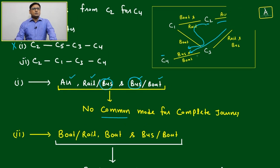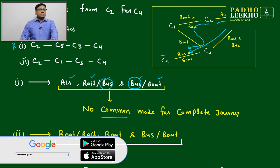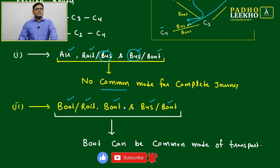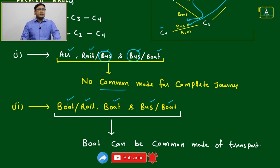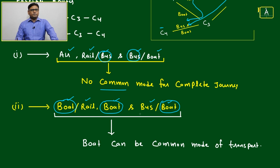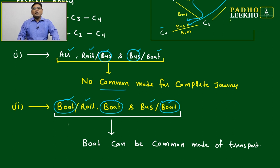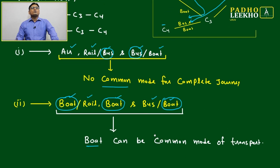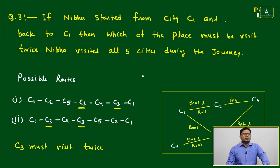Route two: C2 → C1 → C3 → C4. C2 to C1 offers boat or rail; C1 to C3 offers boat; C3 to C4 offers bus or boat. The interesting point is that boat is available on all three segments: C2–C1 (boat), C1–C3 (boat), and C3–C4 (boat). So we can travel from C2 to C4 entirely by boat without changing the mode of transport.